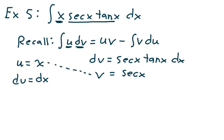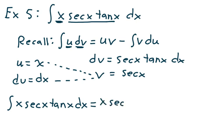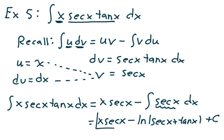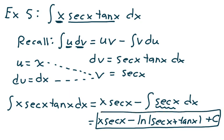Using the uv minus integral of v du formula, the integral of x secant x tangent x dx equals x secant x minus the integral of secant x dx. The integral of secant x dx is the natural log of the absolute value of secant x plus tangent x, so the answer is x secant x minus ln|sec x + tan x| plus c. That concludes this video for section 7.2 where we did five more examples. Thank you.